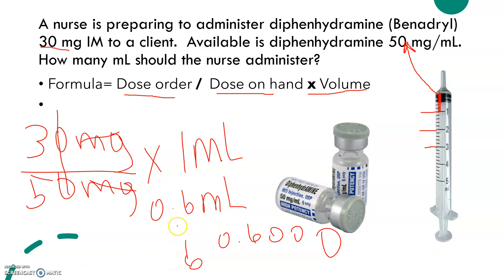Remember, the formula is dose order over dose on hand times the volume. Plugging it in: dose order is 30, dose on hand is 50, times the volume which is one ml — the answer is 0.6 ml with no trailing zero. I hope this video was helpful. If you have any questions or comments, please write them in the comments box. Thank you so much for watching. Please stay tuned for more information on medication calculation.